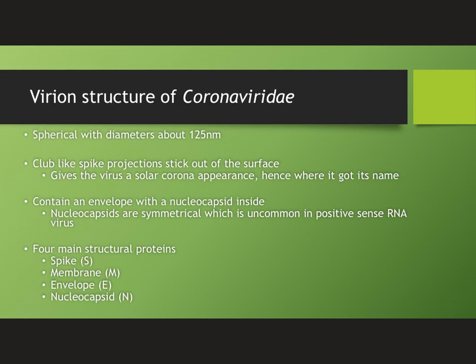The Coronaviridae virion structure is spherical with diameters of about 125 nanometers. The club-like projections that protrude from the surface give these viruses a solar corona appearance, leading to the name coronavirus. These viruses contain an envelope with a nucleocapsid inside. The nucleocapsid for these viruses is helical, which is uncharacteristic of positive-sense strand RNA viruses but a common feature for negative-sense strand RNA viruses. There are four main structural proteins encoded on the three-prime end of the genome: the spike protein (S), membrane protein (M), envelope protein (E), and nucleocapsid protein (N).